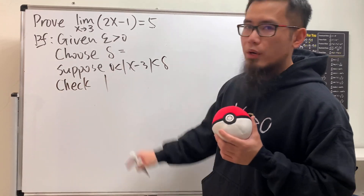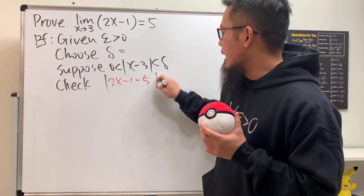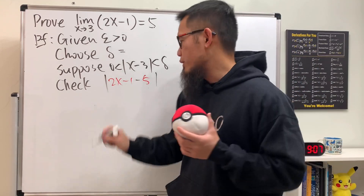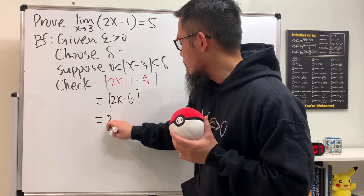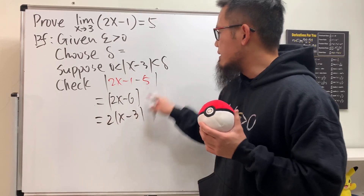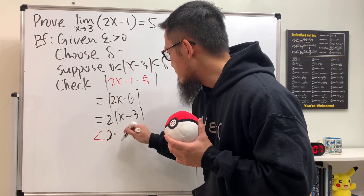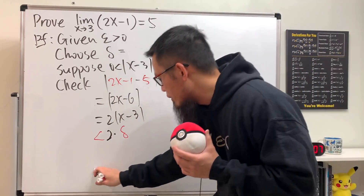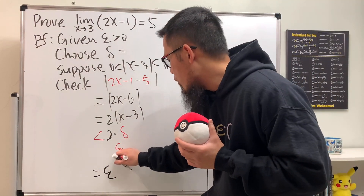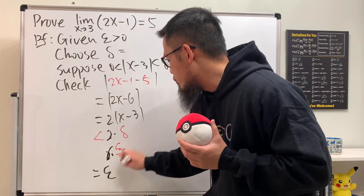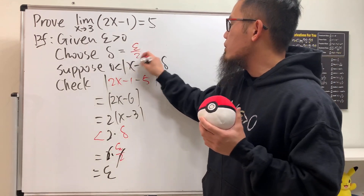For the Check step, put down the absolute value of f(x) minus L, which is |2x minus 1 minus 5|. We can simplify: this equals the absolute value of 2x minus 6. Factor out the 2, and we get 2 times |x minus 3|, which is less than delta. So this becomes 2 times delta. Since we need to end up with epsilon, delta should equal epsilon over 2, because the 2's will cancel.